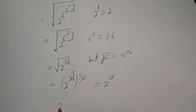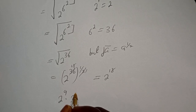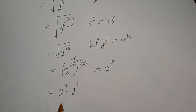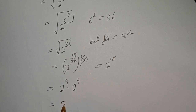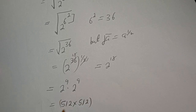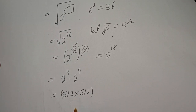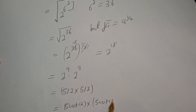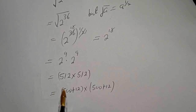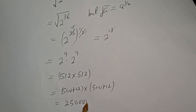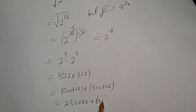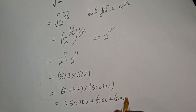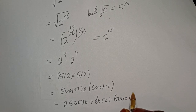Then 2 raised to power 18 is 2 raised to power 9 multiplied by 2 raised to power 9. And 2 raised to power 9 is 512, so we have 512 multiplied by 512, which equals 500 plus 12, multiplied by 500 plus 12. Expanding: 500 times 500 is 250,000, plus 6,000, plus 6,000, plus 144.